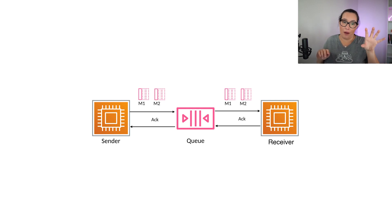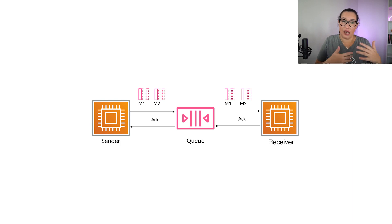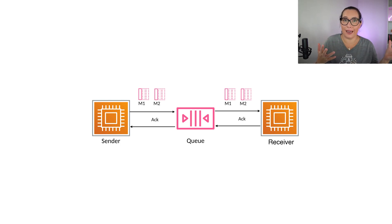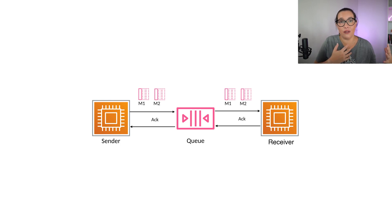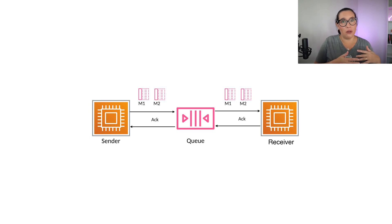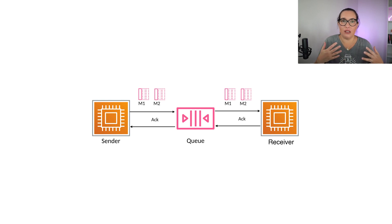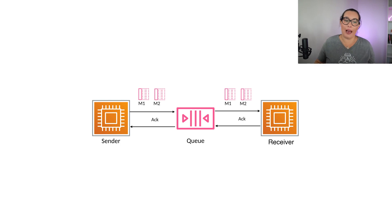Queues are like a buffer in between the sender and consumers. If the sender is sending a lot of messages, the receiver can process them in the time that they need. Also, if the receiver is not available, the messages get stored in the queue and they don't get lost. We can also control the amount of messages that are sent — the receiver can say it can only ingest 10 messages per second, and the queue will handle that.